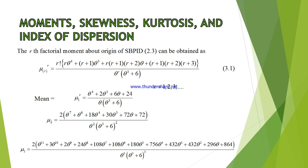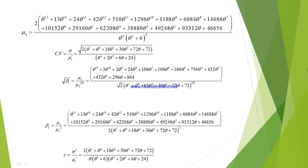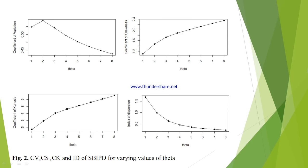In the next section, moment, skewness, kurtosis, coefficient of variation, and index of dispersion have been derived. It is a very tough task to derive these distributions, so we used MAPLE software to solve this problem — specifically to derive the coefficient of variation, second, third, and fourth moments. Graphically: coefficient of variation increases as theta increases, but only up to theta equals 2, after which it is a declining function. Coefficient of skewness is an increasing function of theta, and coefficient of kurtosis is also increasing with theta. However, index of dispersion is a decreasing function as theta increases, as shown in the figure.